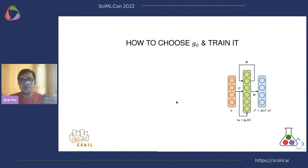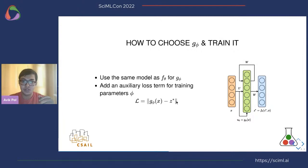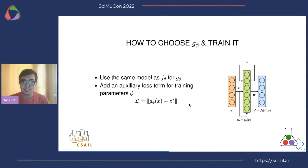Now we have introduced a few problems — we have more hyperparameters in the form of G of phi. In our experiments, we found that if we set G of phi to be the same as F of theta, it just works for all problems. As for how to train it, we minimize the L2 norm between the guessed initial condition and the final solution from the steady-state solver. That is essentially an auxiliary loss term, and we can back-propagate through this end to end.